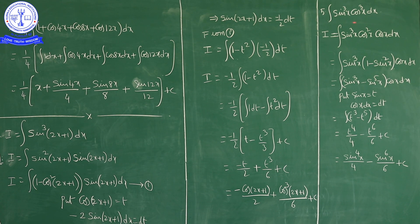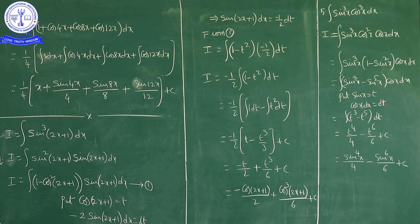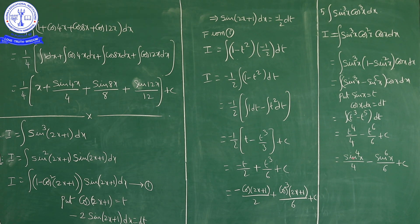Substituting back t = sin x: the final answer is sin⁴x/4 minus sin⁶x/6 plus C. In summary: cos³x was written as cos²x · cos x, cos²x was replaced by (1 minus sin²x), sin x was substituted as t with cos x dx = dt, reducing to integration of t³ minus t⁵, giving t⁴/4 minus t⁶/6, and then replacing t with sin x.